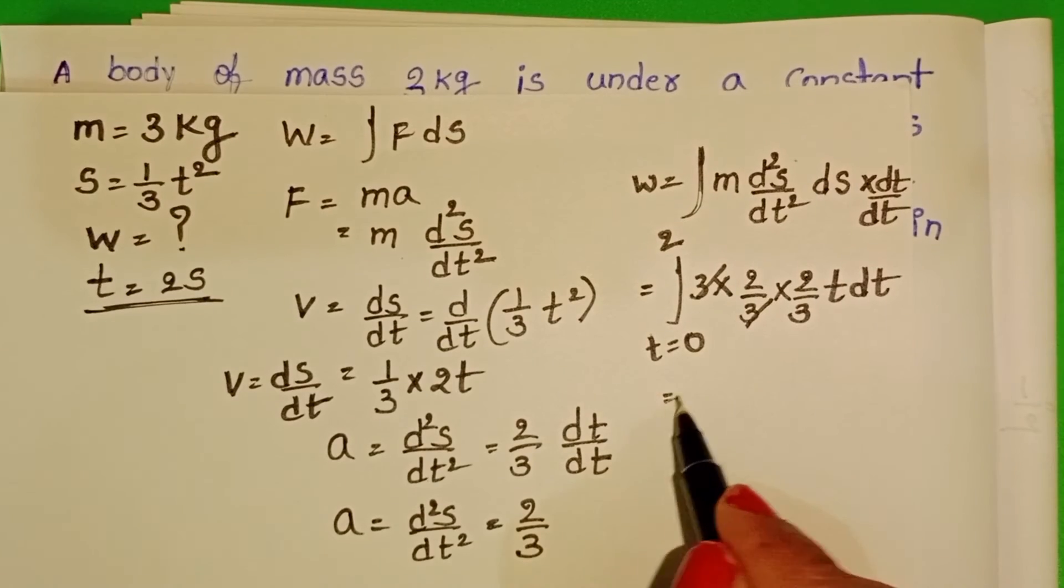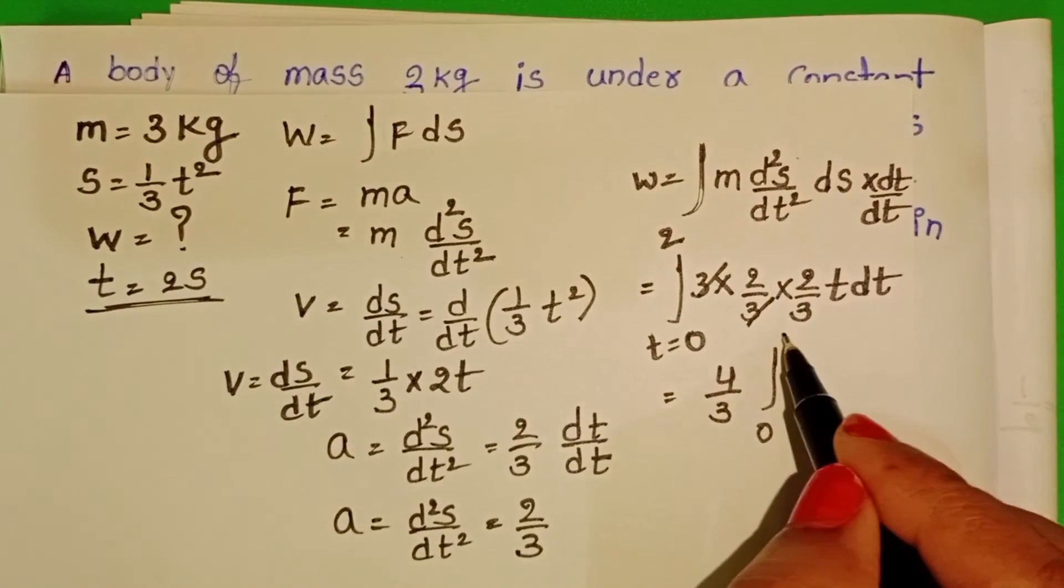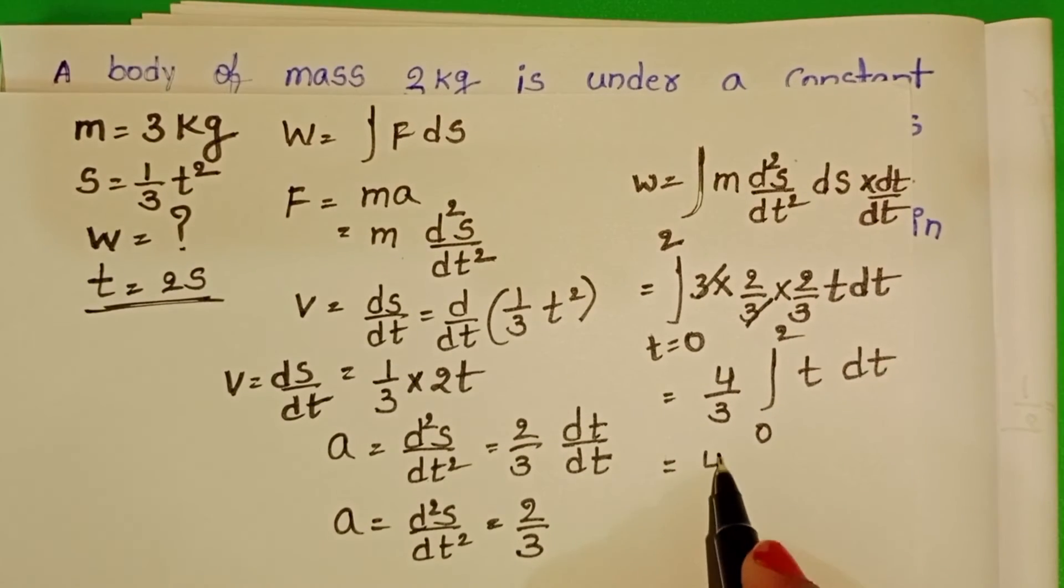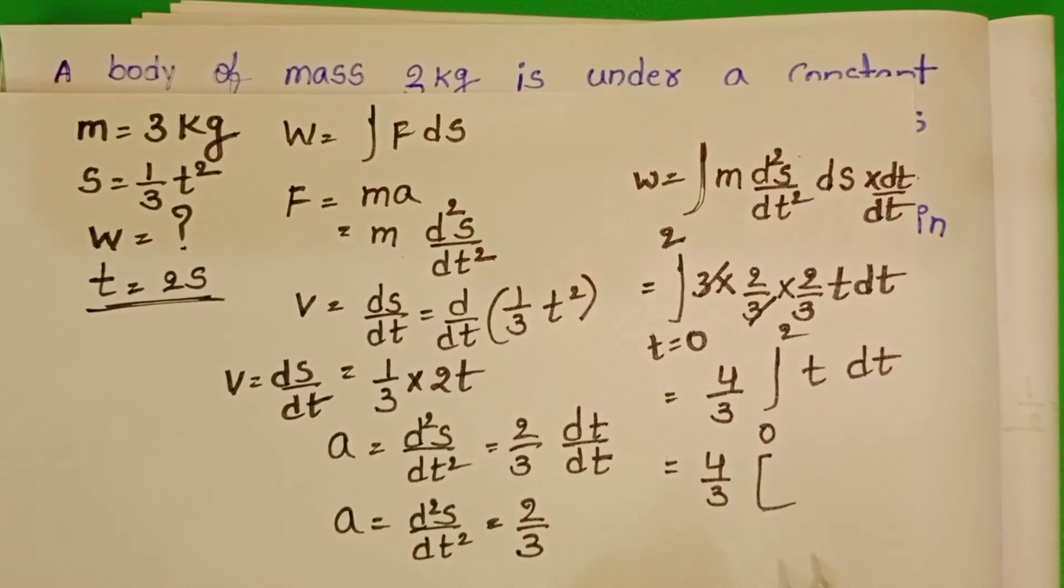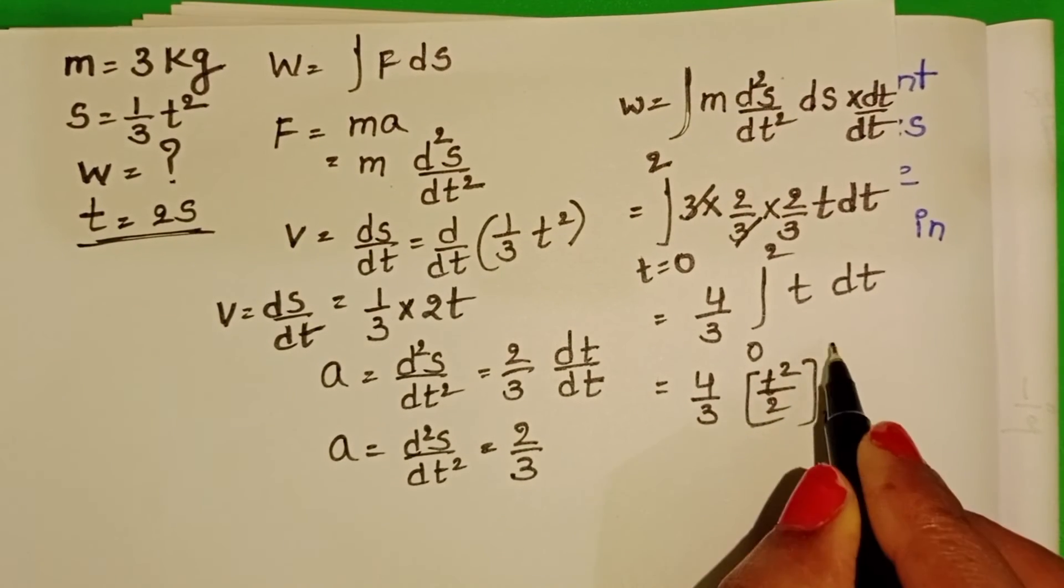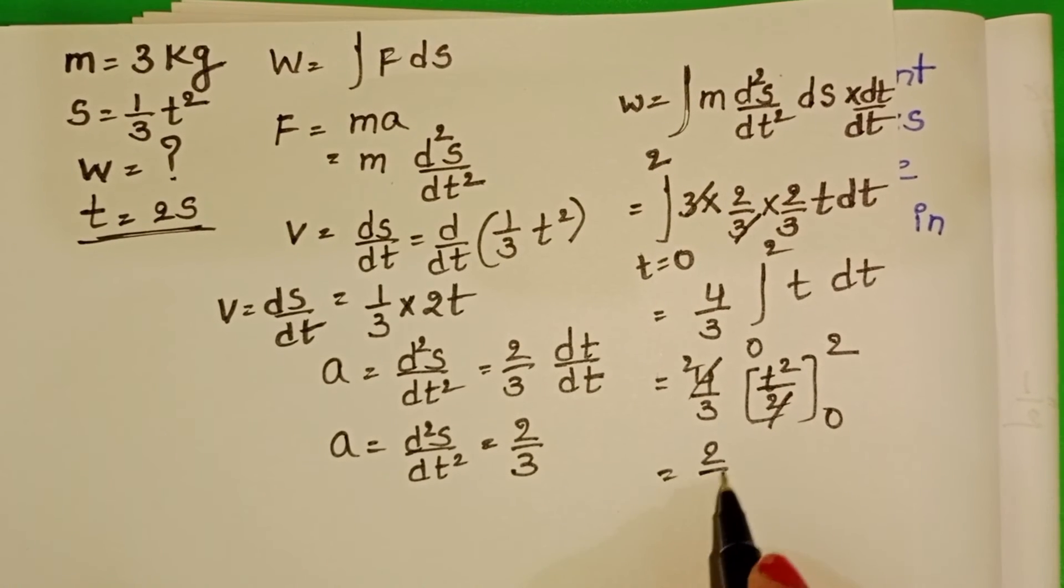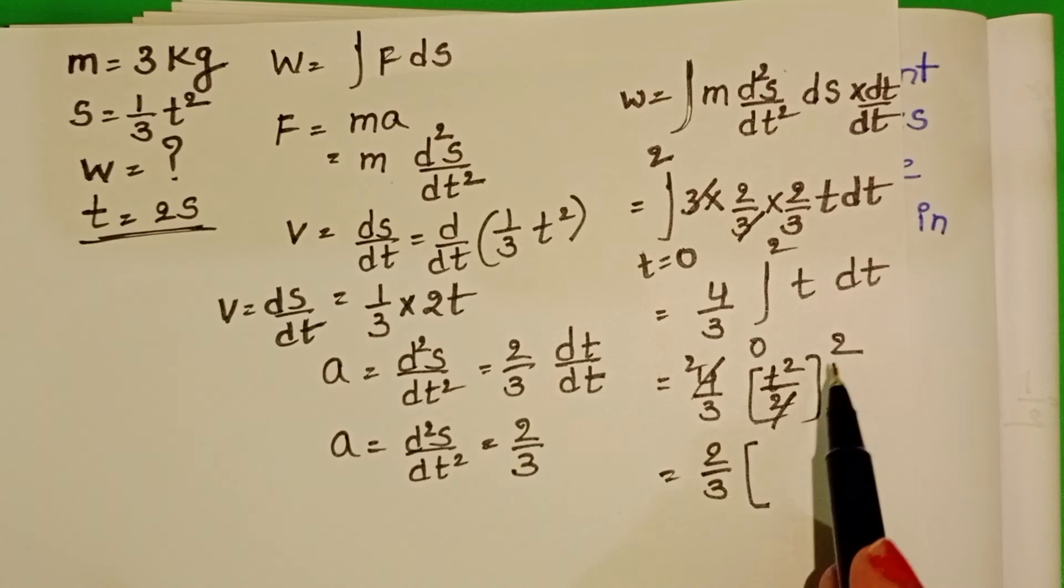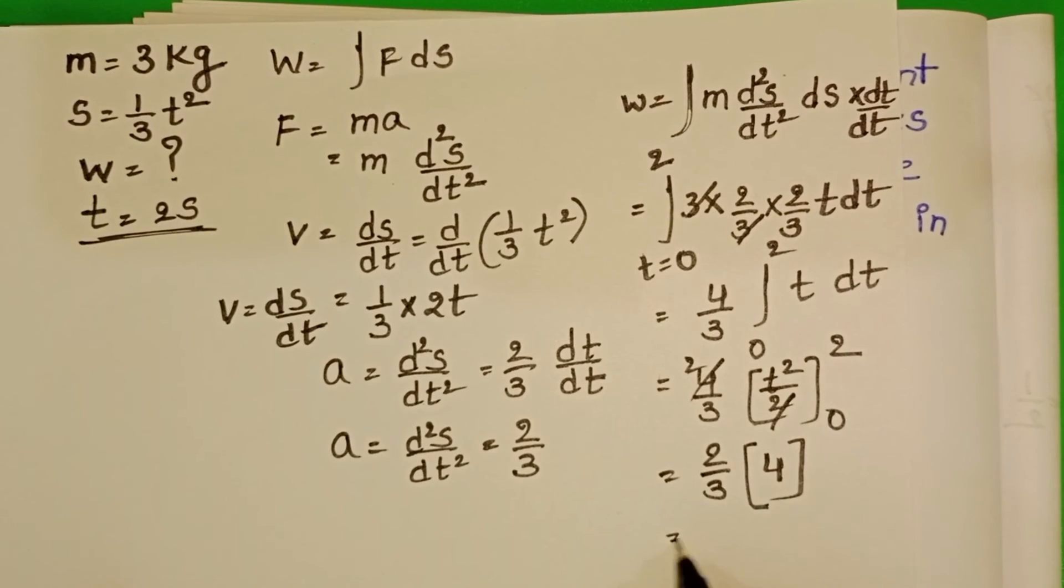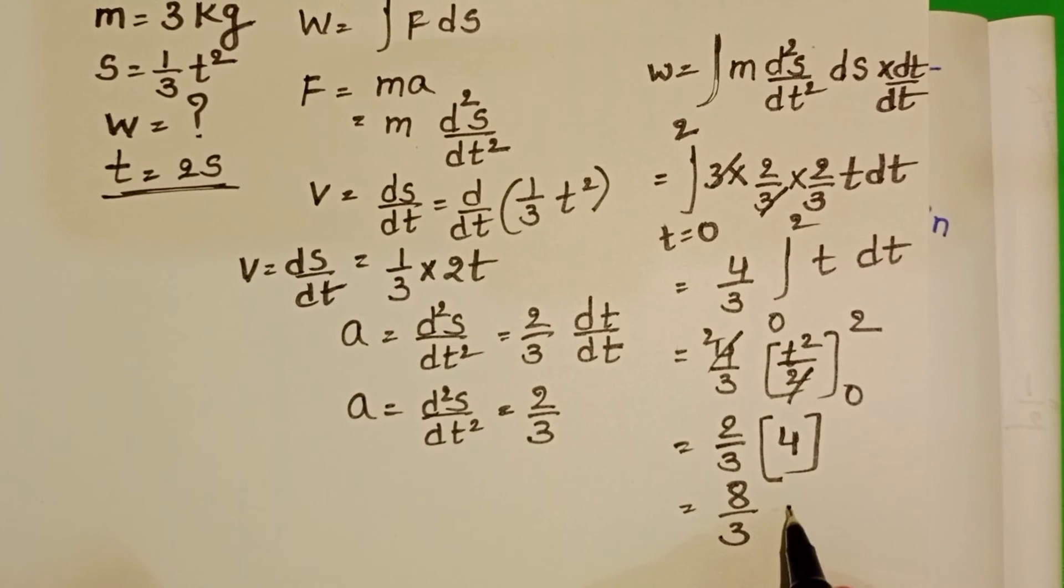Here 3 and 3 get cancelled, giving 4 by 3 integral T dt. Integral T dt equals T square by 2, from 0 to 2. This gives 2 by 3 into—substitute the limits—2 whole square, which is 4. Lower limit is 0. So 2 into 4 by 3 equals 8 by 3 joules.